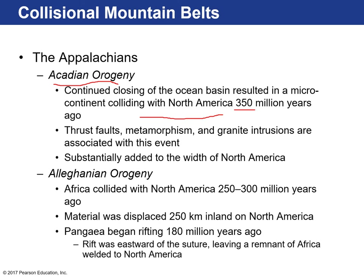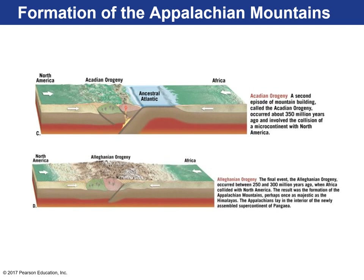At that time — about 250 million years ago — the Appalachians resembled what the Himalayas look like today. Then about 180 million years ago, Pangaea began to break apart and rift apart. The rift was actually east of the suture zone, which means a remnant of Africa remained welded to the North American plate. Here's the Acadian Orogeny — an exotic terrain added to the Appalachian Mountains. Here's the ancestral Atlantic, the Iapetus. Africa collided with North America, and this was the culmination of the Appalachian Mountains.